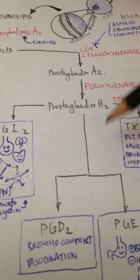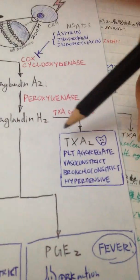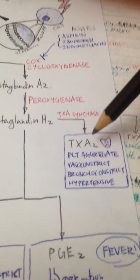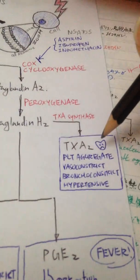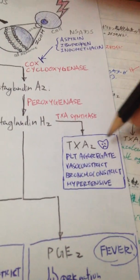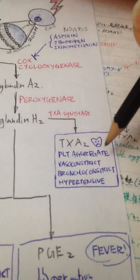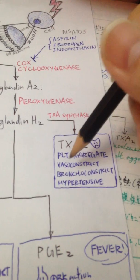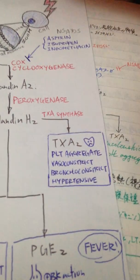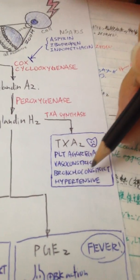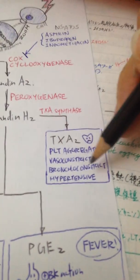On the other hand, we have thromboxane A2, TXA2 for short. This guy is bad for the heart. You see the frowning heart here. This is bad for the heart because it aggregates platelets, causes vasoconstriction, can also cause bronchoconstriction, so it's bad for asthmatics, and it's also a hypertensive agent.